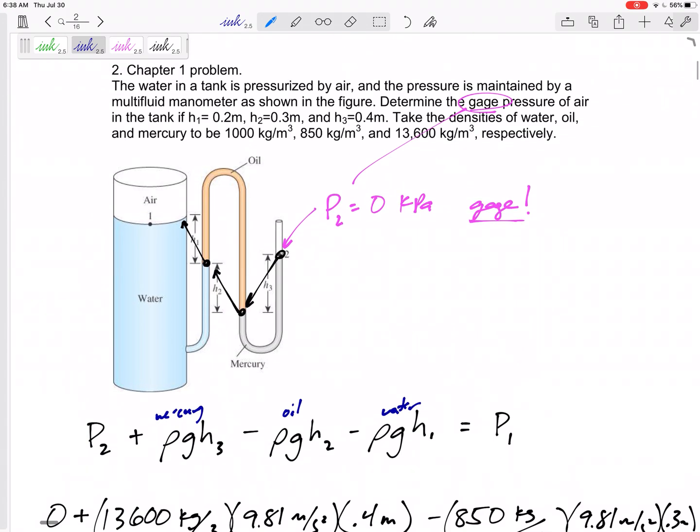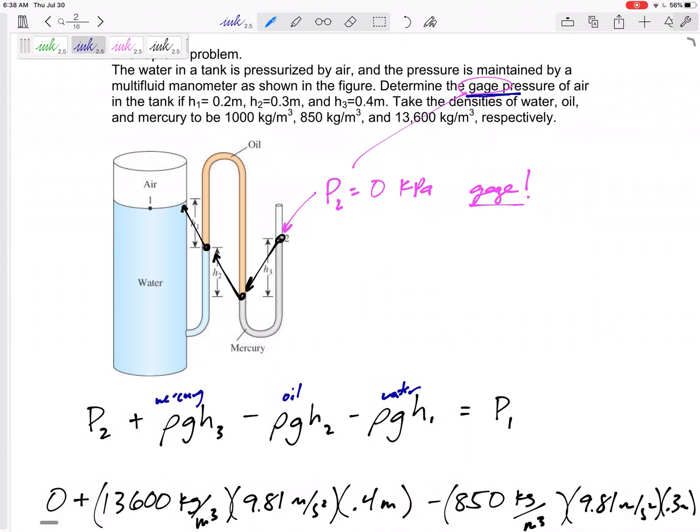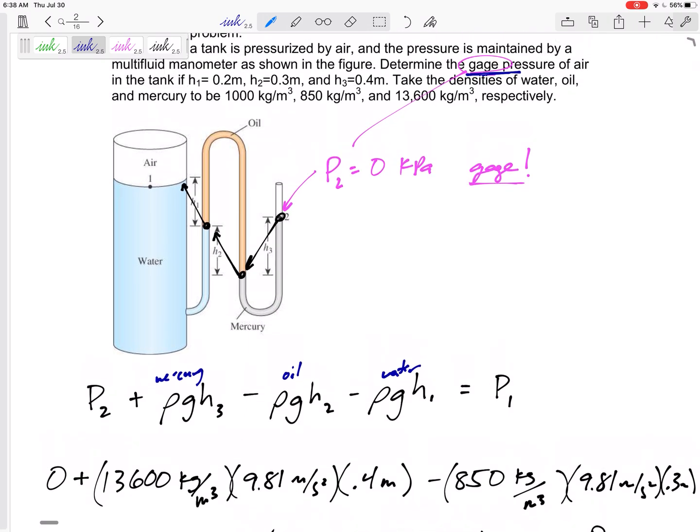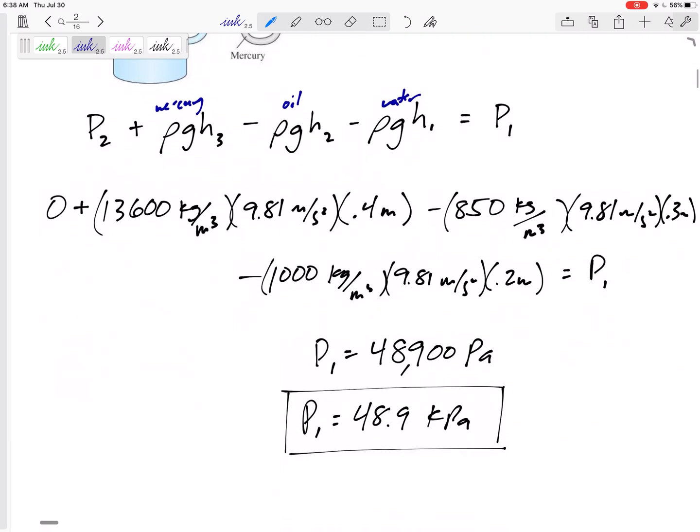Be sure to look at this one. Make sure you understand whether it's asking for gauge pressure or absolute pressure. Then just be careful, you're going from one to two, from here to there. Be careful. Make sure you're using the right height, densities. Make sure you understand specific gravity. You multiply that times the density of water, and then units.